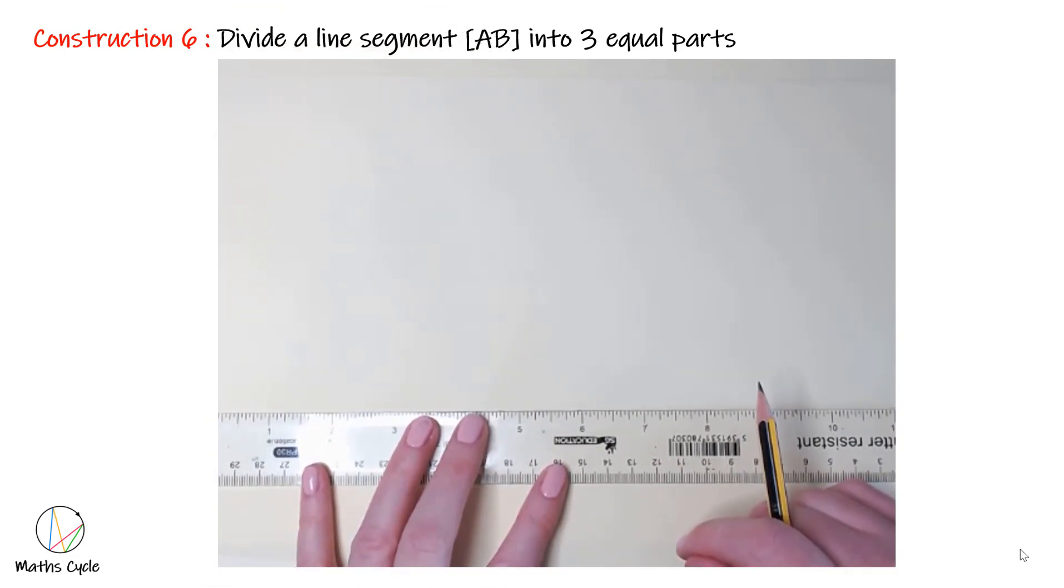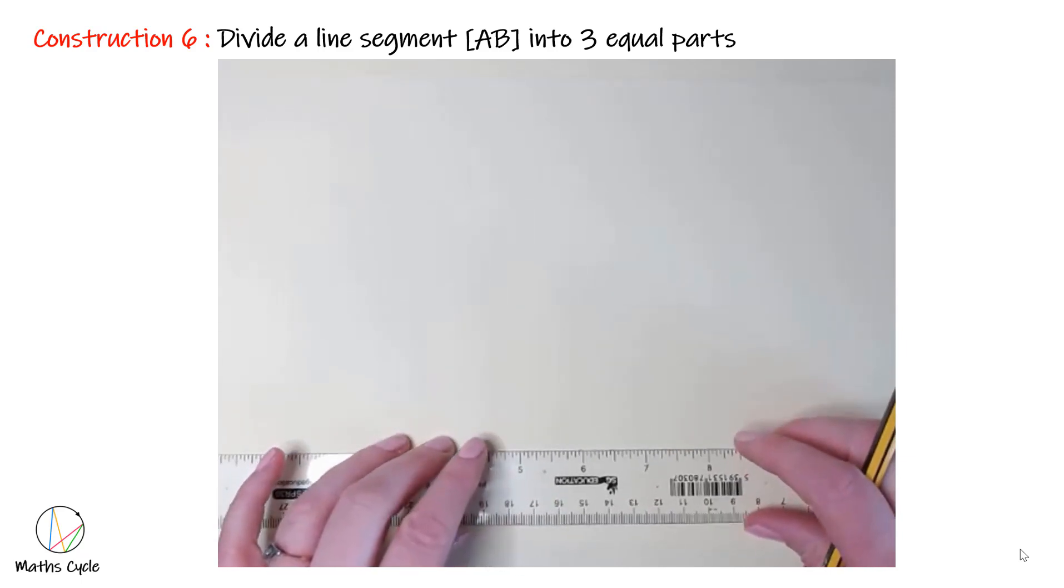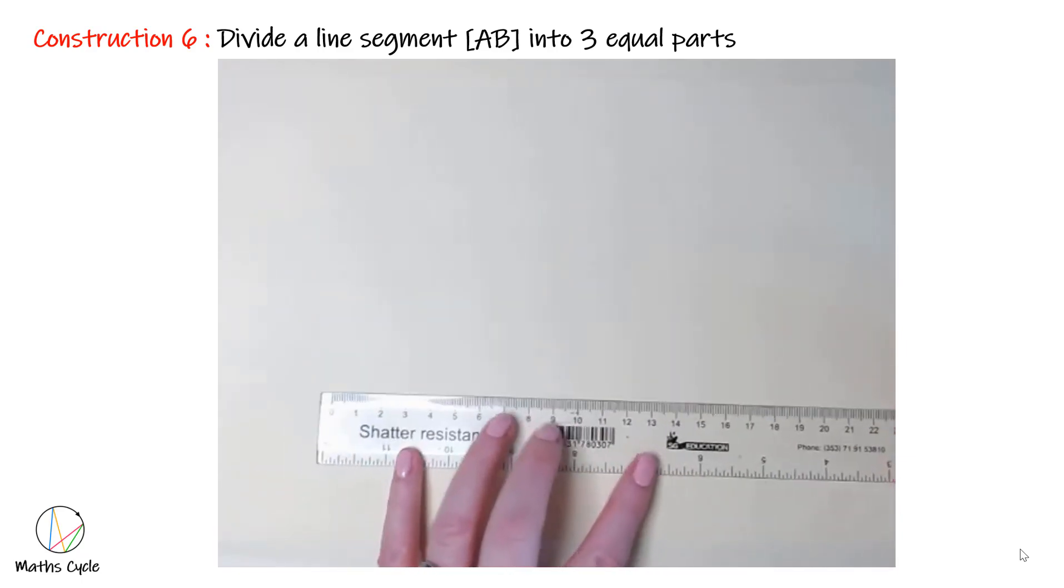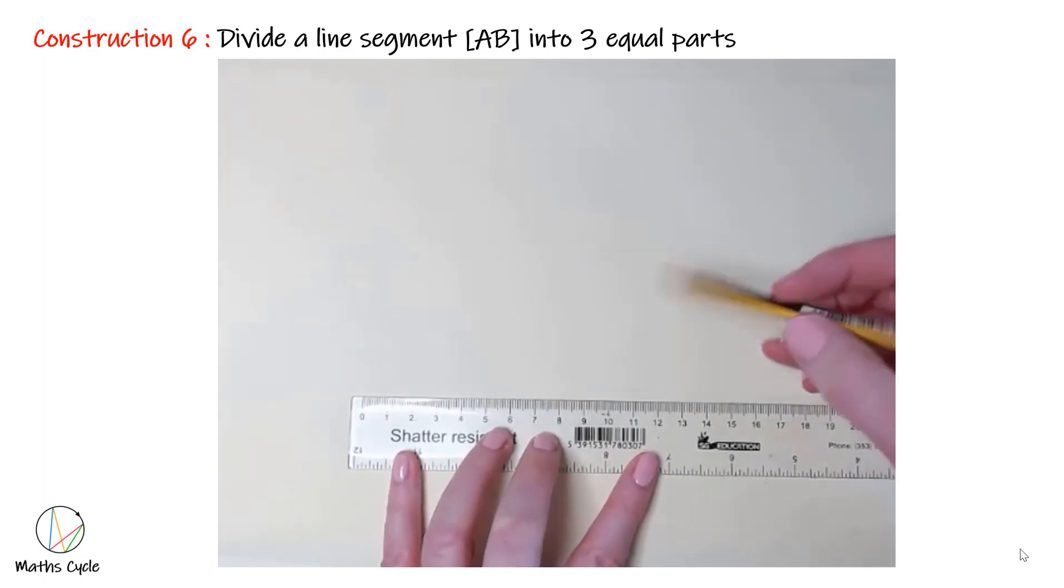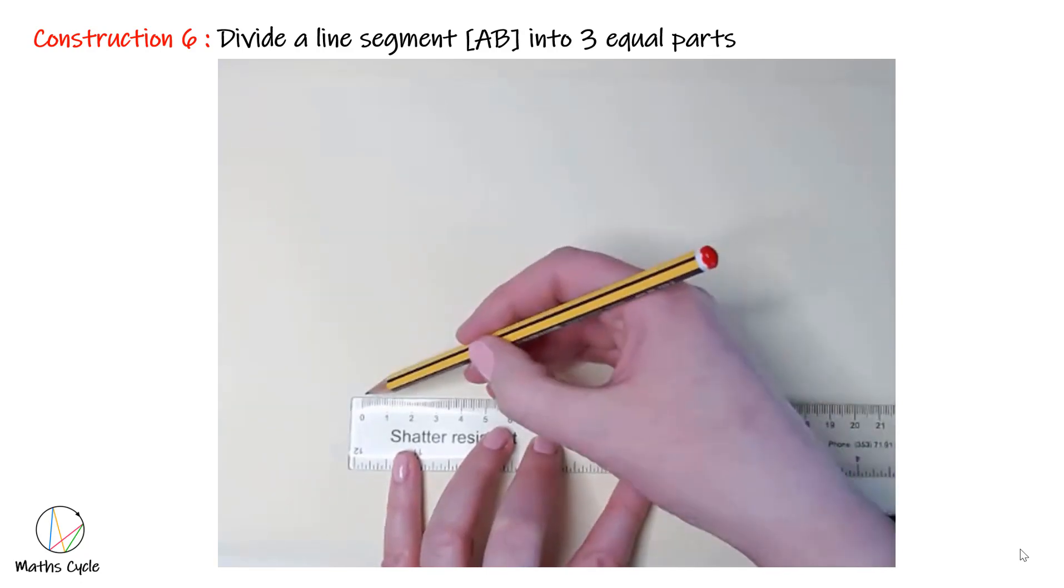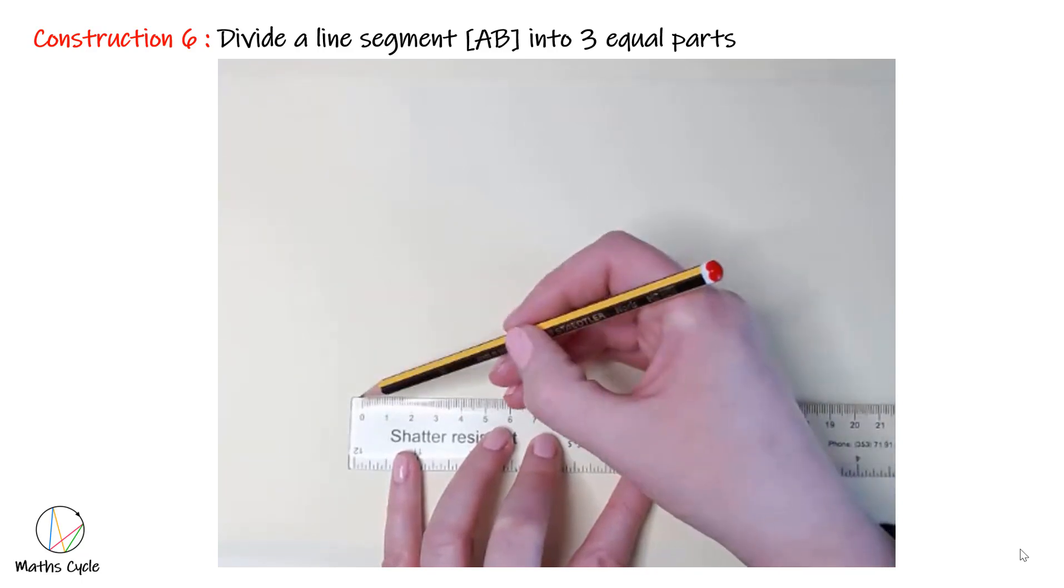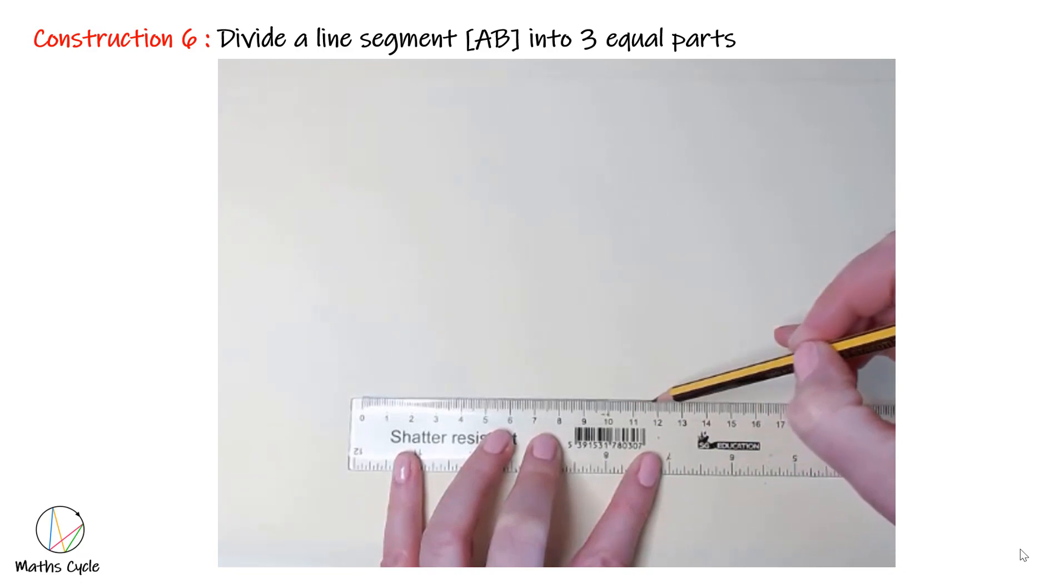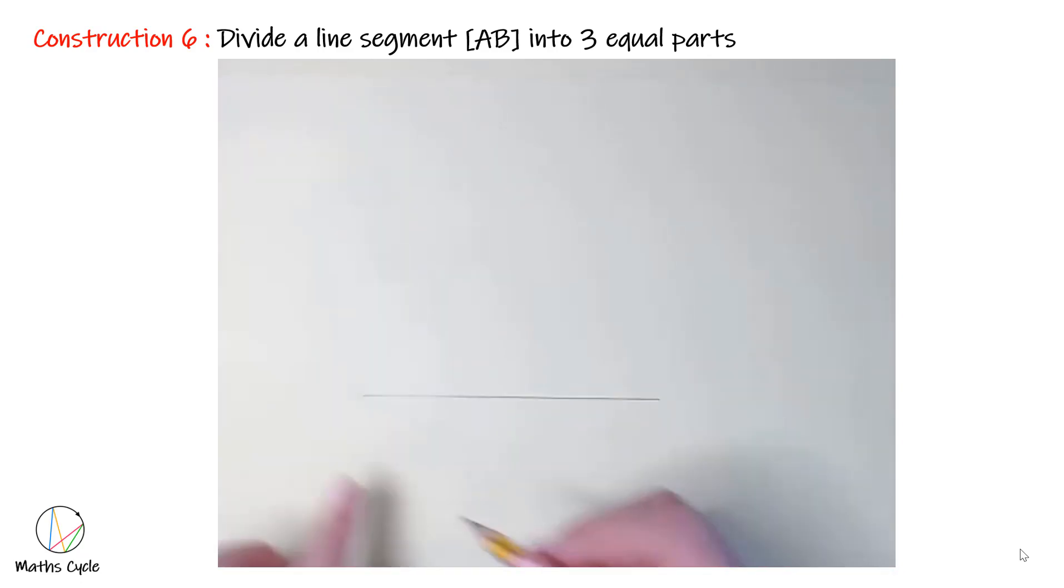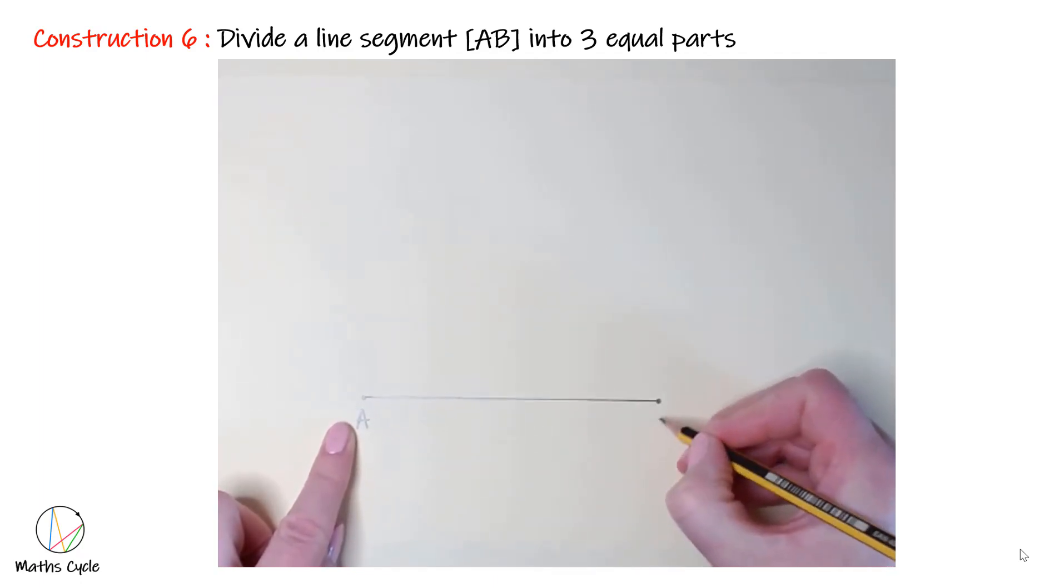Construction 6: Divide a line segment AB into three equal parts. I'm going to draw the line segment AB. It doesn't have to be any length in particular, but for the purpose of this construction I'm going to make it 12 centimeters. Remember when you're measuring you go from the zero of the ruler across to 12. I'm going to call this point A and this point B.